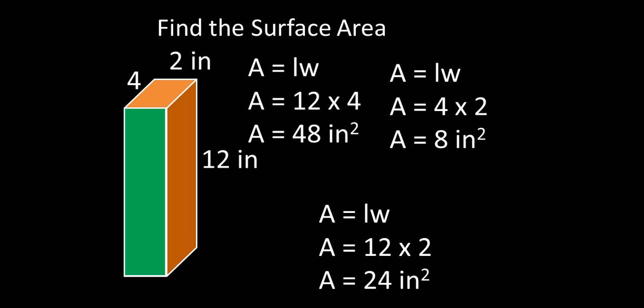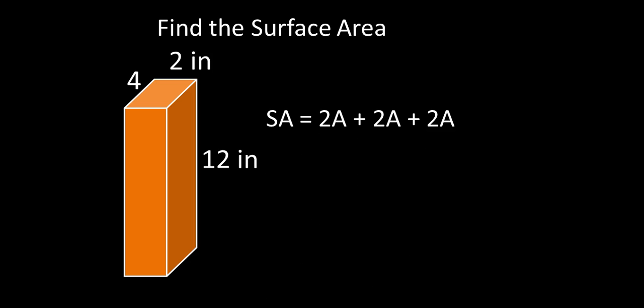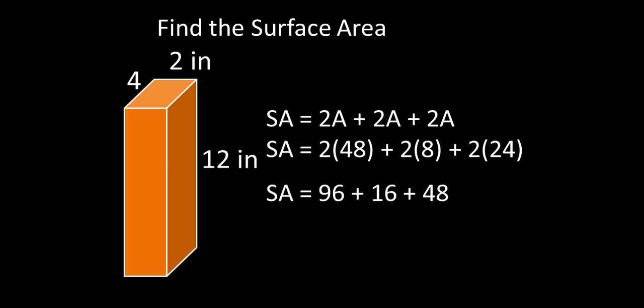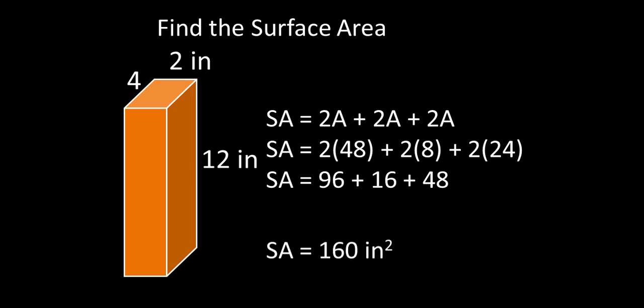And what we're going to do is multiply each of those numbers times two. So here we go. Two times the area of the first one, the second one, and the third one. We'll just go ahead and do that math. Two times forty-eight gives us ninety-six. Two times eight is sixteen and two times twenty-four gives us forty-eight. Add those all together and that gives us our surface area of one hundred sixty square inches. That is the surface area of this rectangular prism.